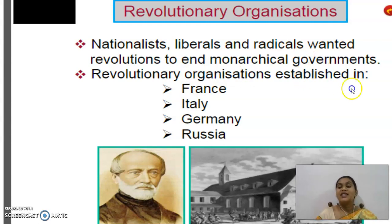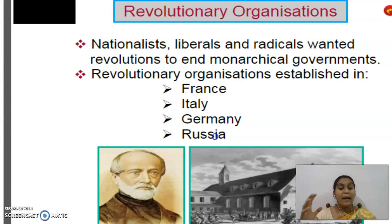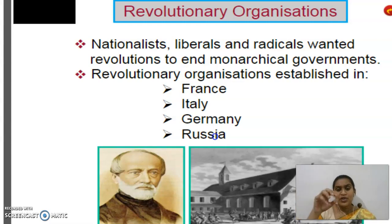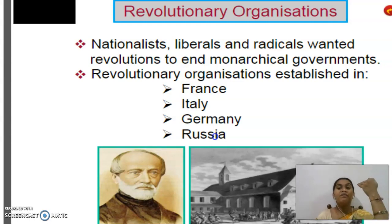Revolutionary organizations were established in France, Italy, Germany, and Russia. Earlier, Russia was not like it is now — it was just an empire which included even Poland. They did not have a proper map. At that time, nationalist people, liberals, and radicals started some revolutionary organizations to bring changes and to end this monarchical government.